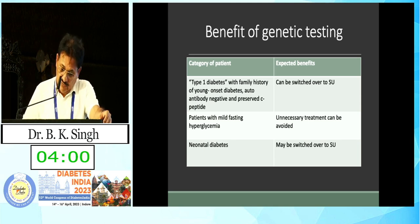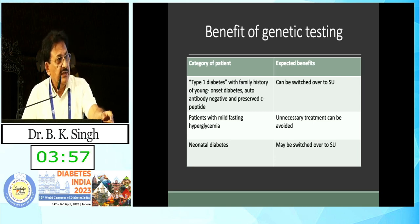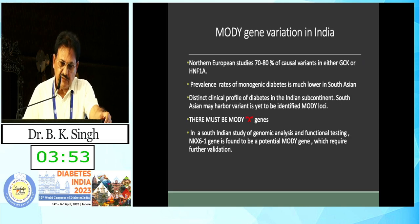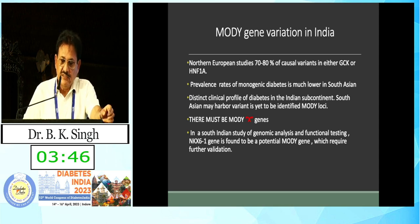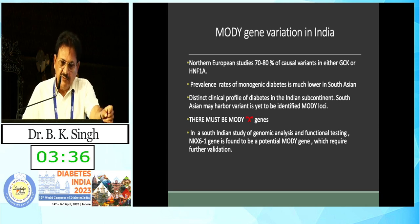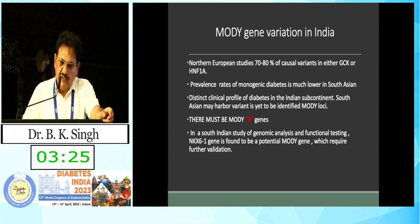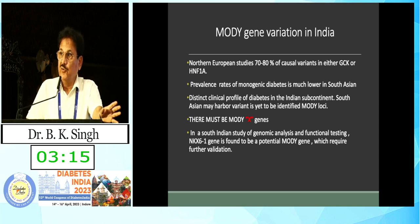Regarding MODY genetic variation in India: European studies indicate that 70 to 50 percent of causal variants are either GCK, MODY, or HNF1 variation. The prevalence rate of monogenic diabetes is much lower in South Asians, likely due to lack of high index of suspicion and poor availability of genetic testing. The distinct clinical profile of diabetes in the Indian subcontinent may harbor variants yet to be identified. In a South Indian genomic study, the NKX6.1 gene was found to be a potential MODY gene, requiring further validation.